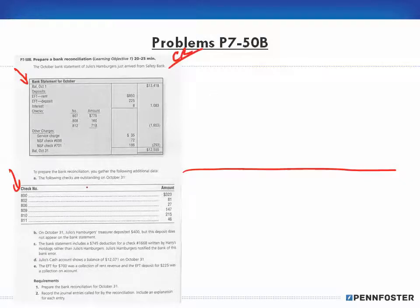You're given the bank statement here but you are not being given a check register. Instead, you're being given all this verbiage. Let's call this our check register or our cash account, and this down here will be our bank statement. It tells us that their cash account shows a balance of $12,071.